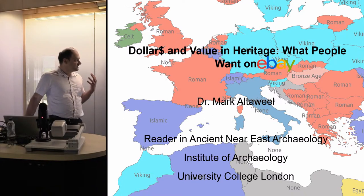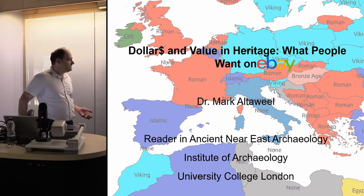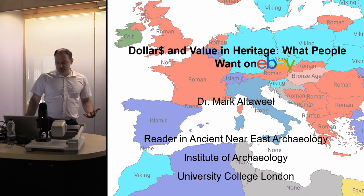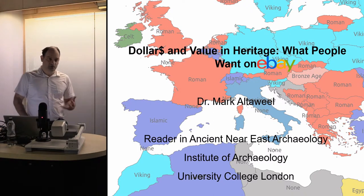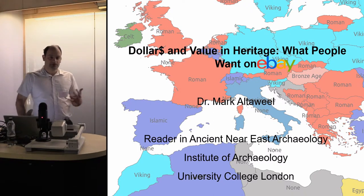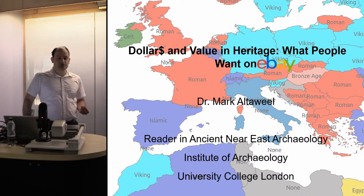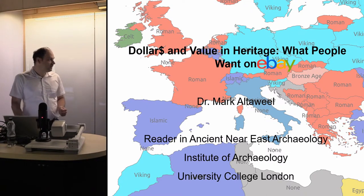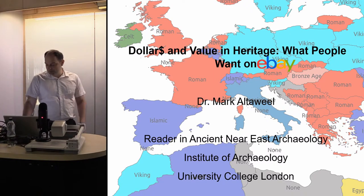eBay is a kind of mass media platform where people all around the world can sell pretty much anything, particularly the US site which is generally international. This was a challenging project because eBay is both a structured and an unstructured dataset, presenting a number of challenges in trying to get relevant and useful information about how antiquities are sold, and what it tells us about how the physical past is used or valued by different people.